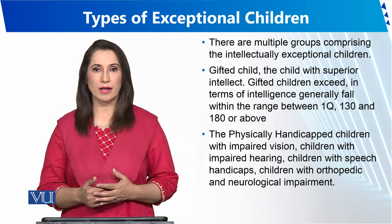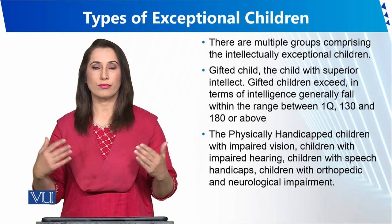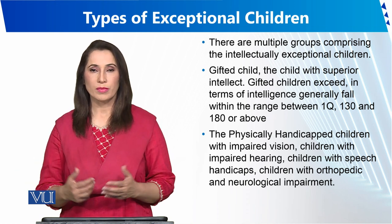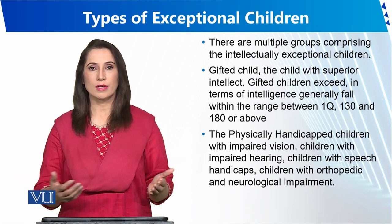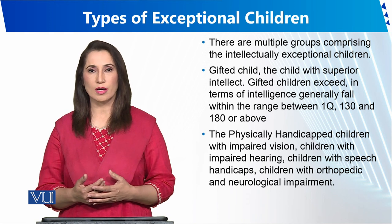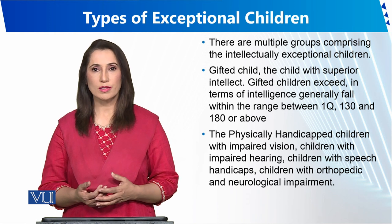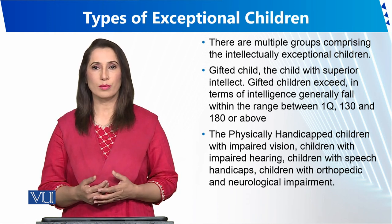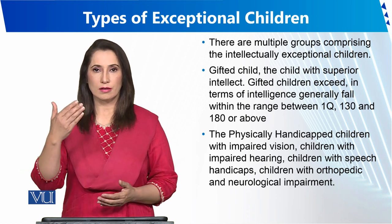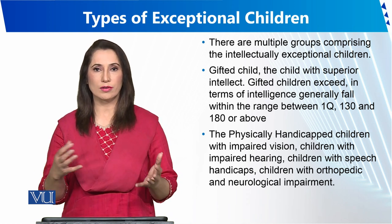A gifted child is a child who has superior intelligence — intelligence that is greater than that of average children. Their IQ level can be above 142 and can go up to 180. Alfred Binet started intelligence testing and in 1905 he developed individual tests for humans, and worked on intelligence and its exceptions. He created a yardstick to measure intelligence.